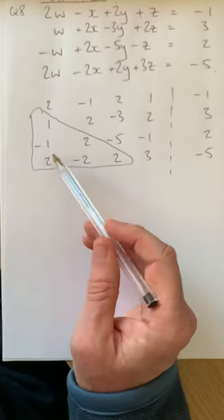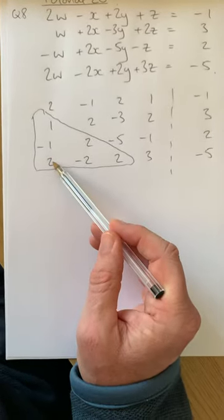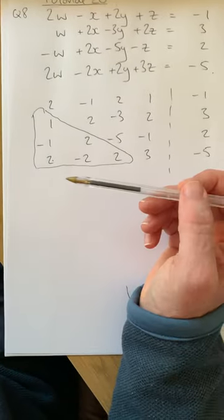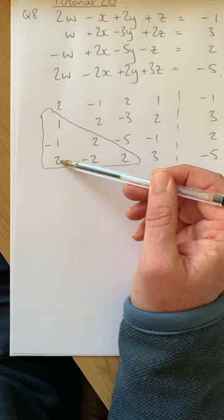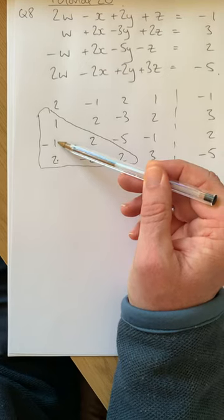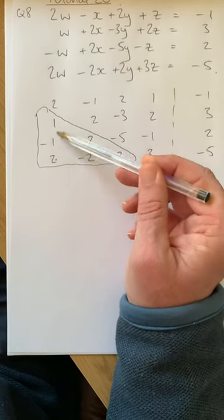You need to start off here with this 2, so you do it in a progressive logical way. You start off with this zero here, you make that 2 into zero, you make that -1 into zero. So you go up this column,